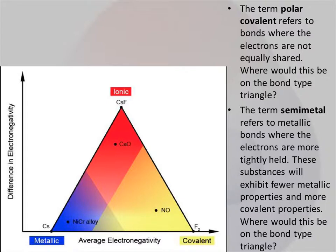So the term polar covalent refers to bonds where the electrons are not equally shared. So that is where you have one that is more electronegative than the other. And we would expect to see something like that along this region of the triangle because this is where you have an unequal sharing of electrons. Ionic is a complete transfer of electrons, whereas covalent is a complete share. So polar covalent kind of lies in between the two.